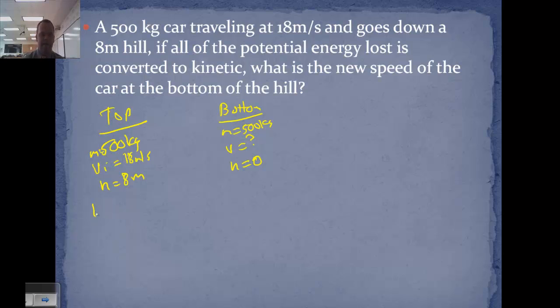So we need to find the kinetic and potential energy at the top. Kinetic is one-half, 500 times 18 squared, comes out to 81,000 joules. Potential is mgh, so 500 times 9.81 times 8, comes out to 39,240 joules.